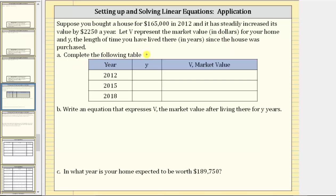Part A, complete the following table. Notice how we're given the year and then we're asked to find Y, the number of years you've lived in the home, and then V, the market value. Well because you purchased the home in 2012, in 2012 you have lived in the house zero years and therefore Y is zero. In 2015 you've lived in the home for three years and therefore Y is equal to three.